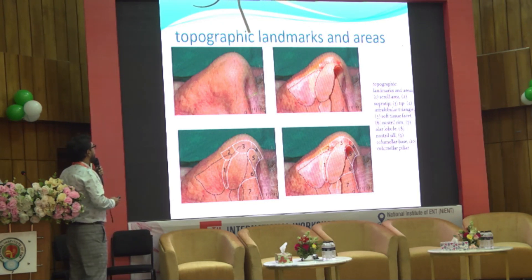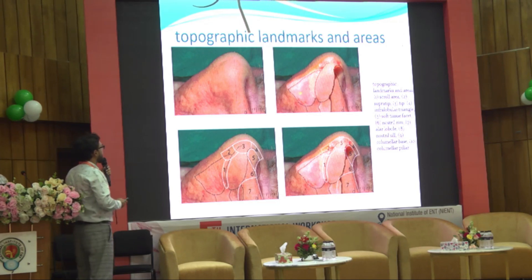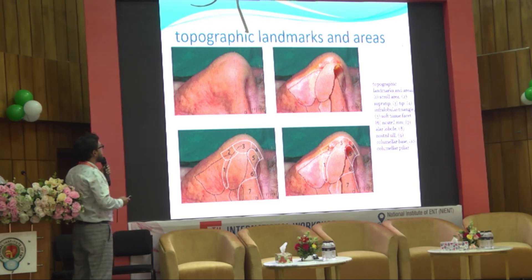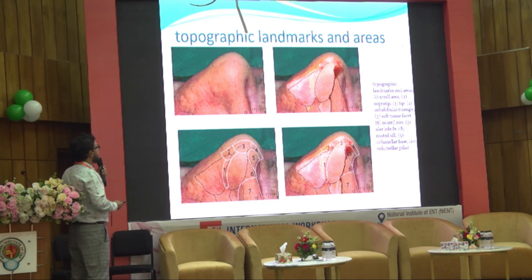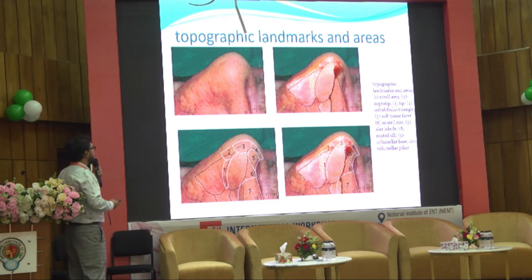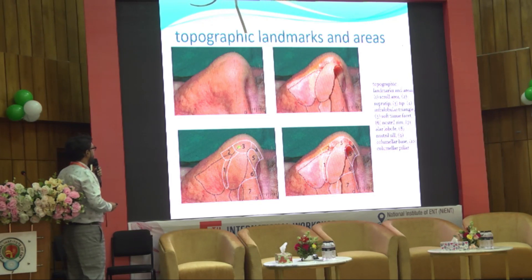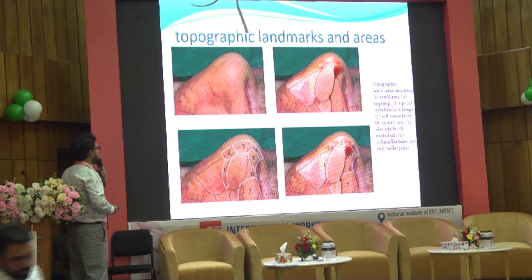In the lateral view, we demonstrate the upper lateral cartilage and the lower lateral cartilage. The junction between them is called the scroll area, which is very important for tip stability.